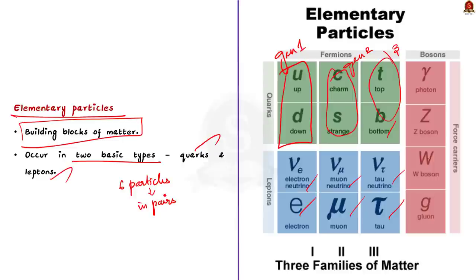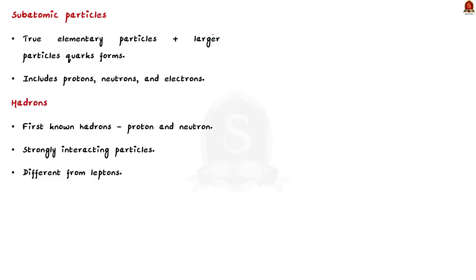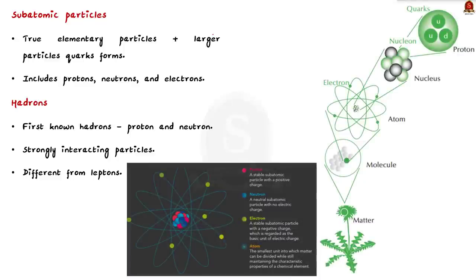The electron, muon, and tau all have an electric charge and a sizable mass, but the neutrinos are electrically neutral and have very little mass. These are the basic things to remember about elementary particles. Such elementary particles come under a larger term called subatomic particles. The term subatomic particles refers to the true elementary particles such as quarks and electrons, and also to the larger particles formed by quarks.